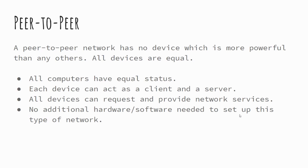In a peer-to-peer model, all computers are equal — there's no central point of communication and no machine has more importance than another. When you want to access something on a peer-to-peer network, you need to access it from the machine it's saved on, as files and programs are stored on the individual machine rather than a central server. If you change machine, you won't necessarily be able to access data on another machine unless it's switched on and sharing is enabled. One advantage is that peer-to-peer is comparatively cheaper to set up — you can create one with just two or more computers and simple ethernet cables or Wi-Fi.